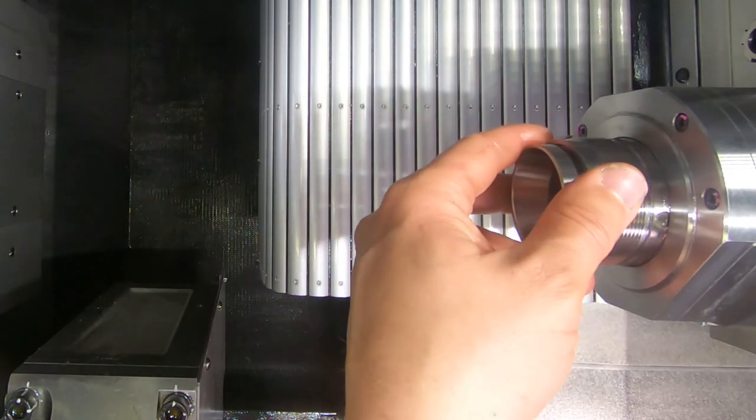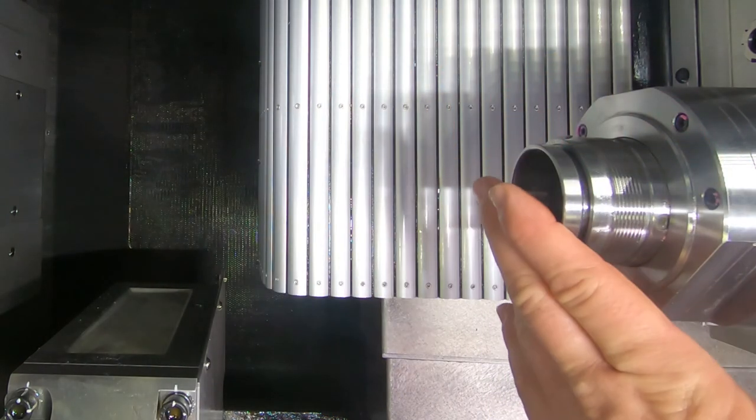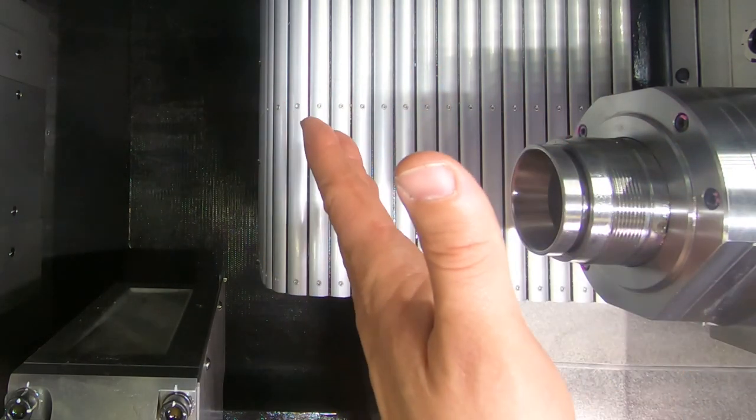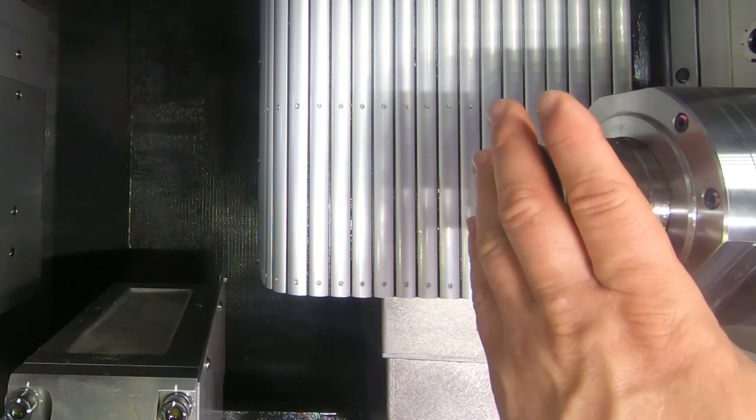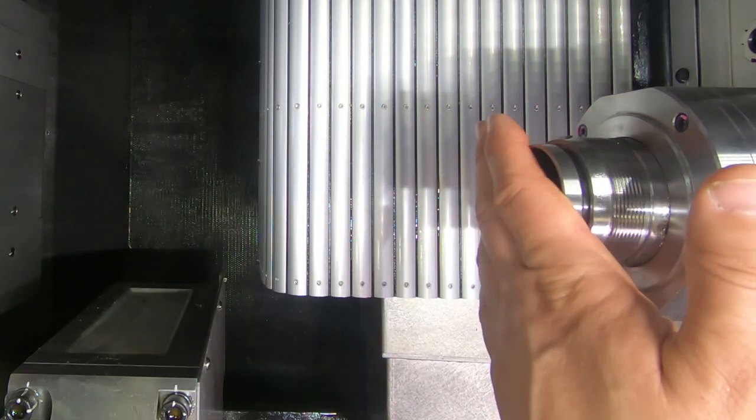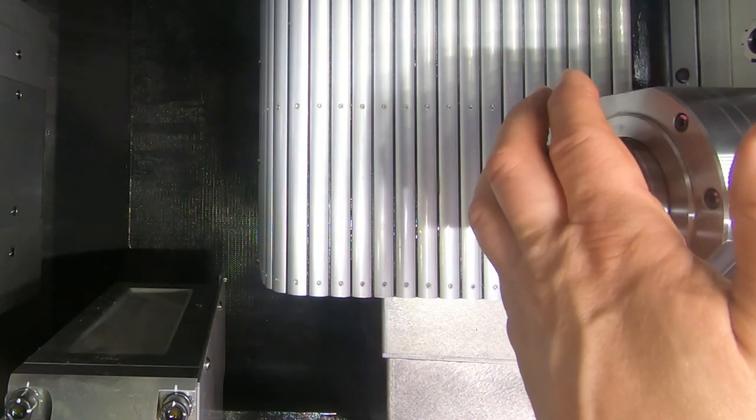We'll go ahead and insert our collet, put our nut on and tighten it down. We can reset our collet tension if needed. If it's the same exact collet, you shouldn't have to reset your tension. Put your nut back on, tighten it down and you should be good to run production again.